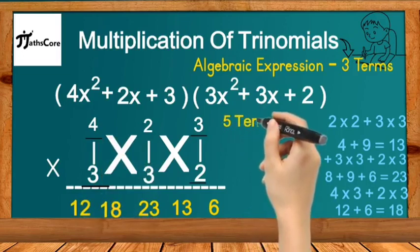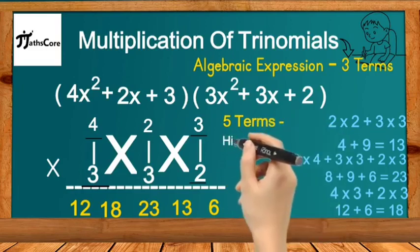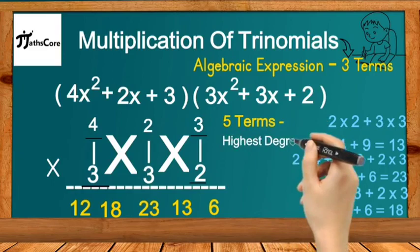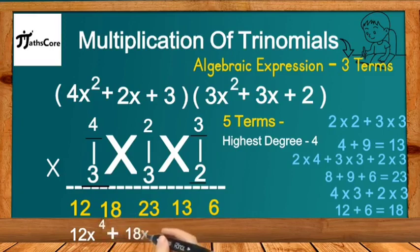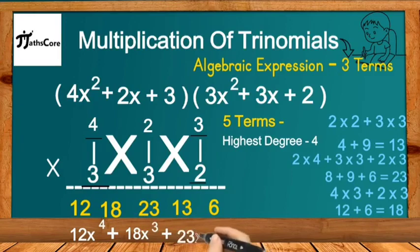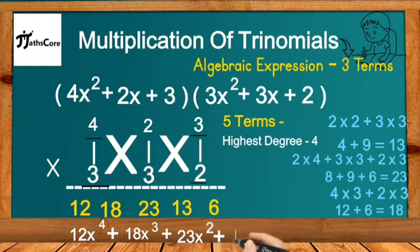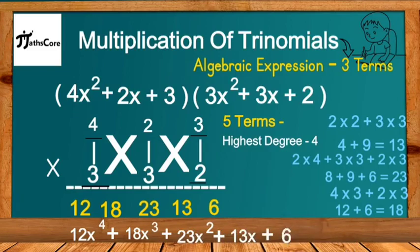So we got five terms: 12, 18, 23, 13, and 6. We write this in polynomial form — since there are five terms, the highest degree is 4: 12x⁴ + 18x³ + 23x² + 13x + 6, where 6 is the constant term. In this way, you can multiply any polynomial using the same concept. If you have any queries related to polynomial multiplication, type in the comment box. Thanks for watching.